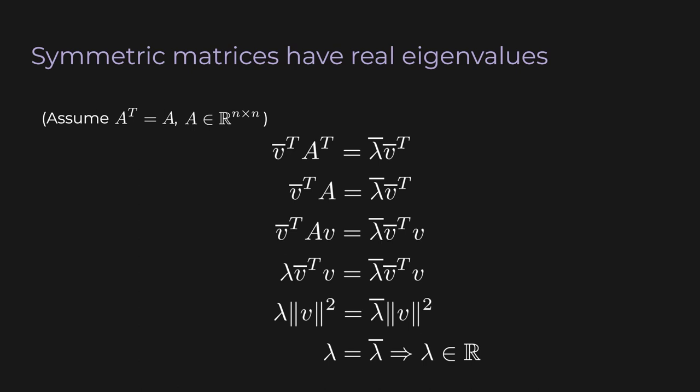There we go. There were a few steps, but just by using some basic properties, we've proved that all eigenvalues of a symmetric matrix must be real. This is a crucial fact. Now that we've conquered that, on to the next proof.